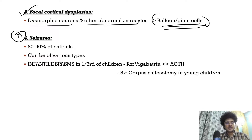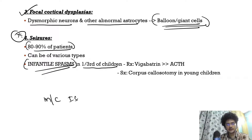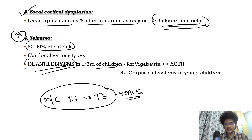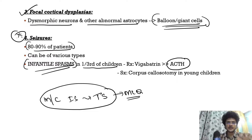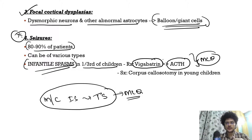Seizures are very common, seen in 80 to 90% of patients, and can present as multiple types. Infantile spasms occur in one-third of all tuberous sclerosis patients — importantly, tuberous sclerosis is the most common cause of infantile spasms. While ACTH is the overall drug of choice for infantile spasms, in tuberous sclerosis specifically, the drug of choice is Vigabatrin. For refractory cases, corpus callosotomy can be tried.